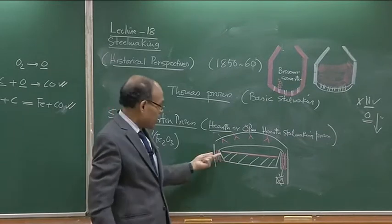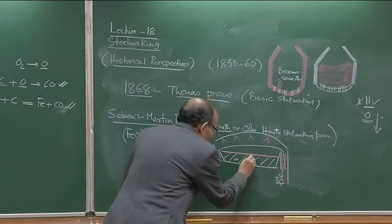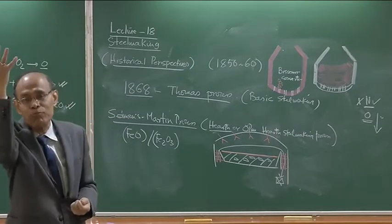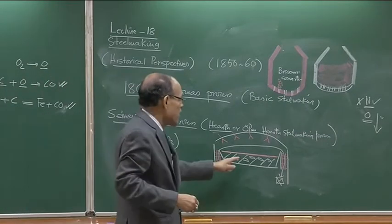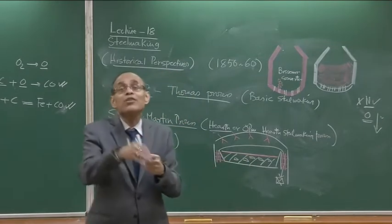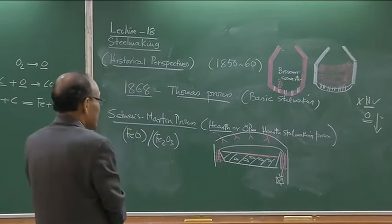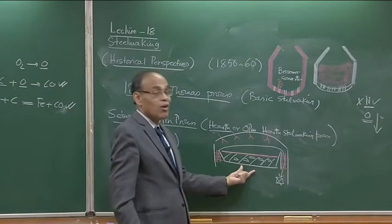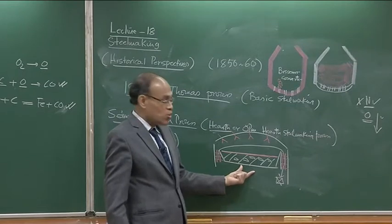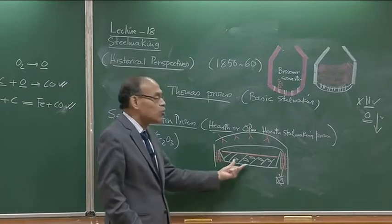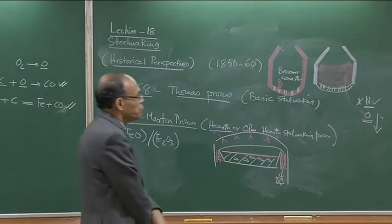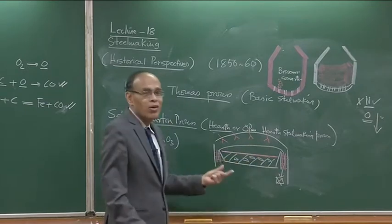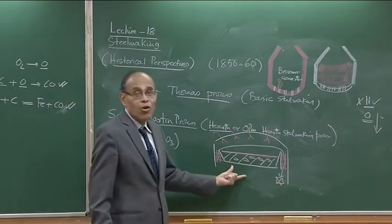In the open hearth, there was not much agitation — just one or two carbon monoxide bubbles rising occasionally, like in a Coca-Cola bottle. So the rate of reactions was small, and the duration of steel making was quite long. The open hearth had the distinct advantage of producing purer steel with less nitrogen and oxygen, but required external fuel and the per-ton processing time was too long because the kinetics of reactions were slow.